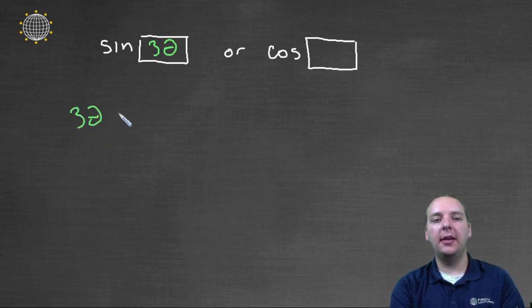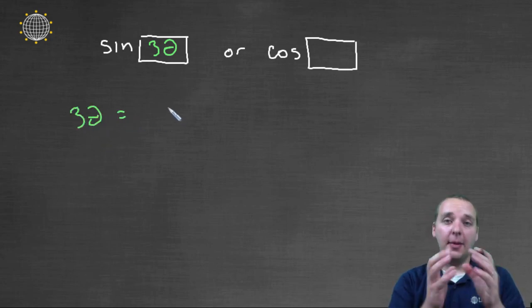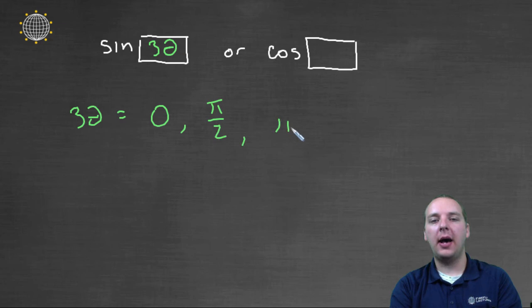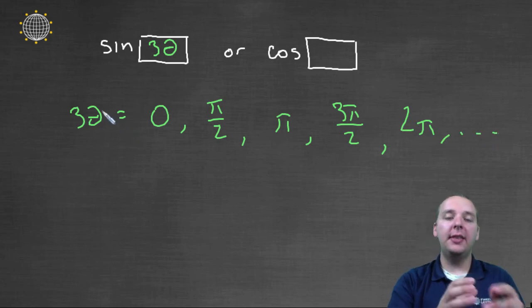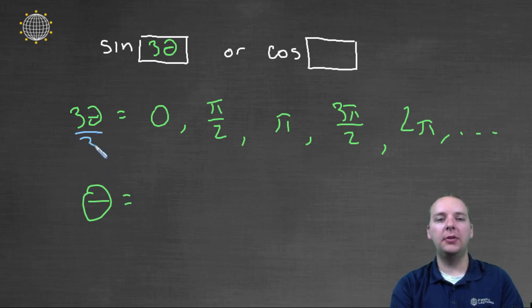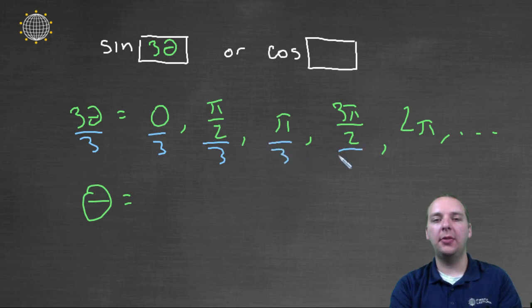You have to consider three theta to be, as a packet, those major angles of zero, pi over two, pi, three pi over two, two pi, et cetera. Three theta as a packet has to equal those major angles, which means that the theta should actually be what? How would you solve for theta here? Well, hopefully you would say you would divide both sides by three. And that's exactly what we'll do. We'll divide all these guys by three.